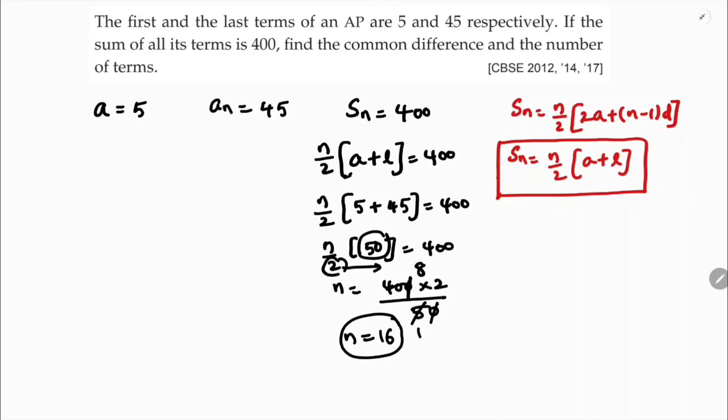n is 16. Now we need to find the common difference. So an is 45. The an formula is a plus n minus 1 into d equals 45.